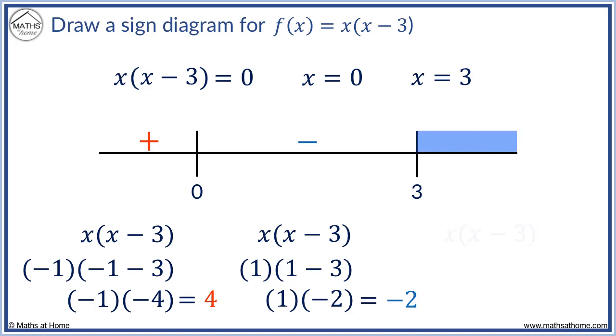Finally, we look at values of x greater than 3. We choose x equals 4. This simplifies to 4 brackets 4 minus 3 which is 4, 1 which equals 4. This is positive and our sine diagram is complete.